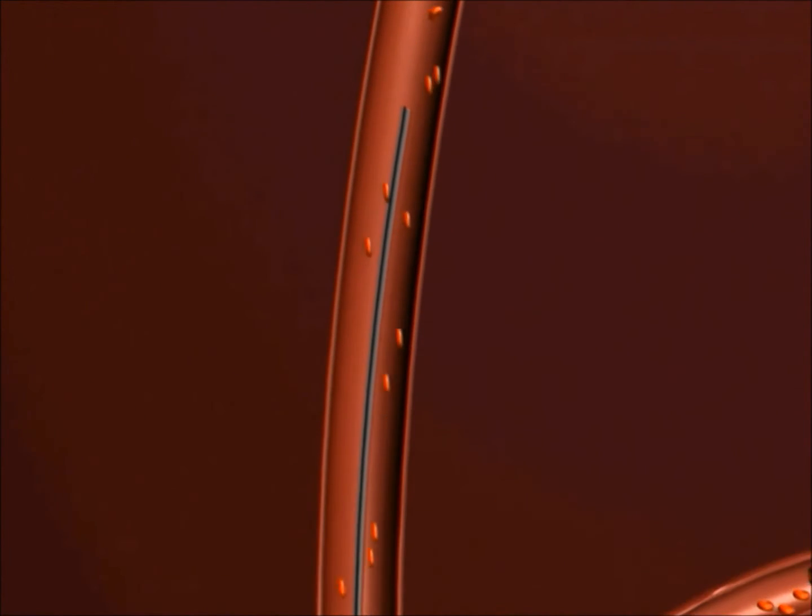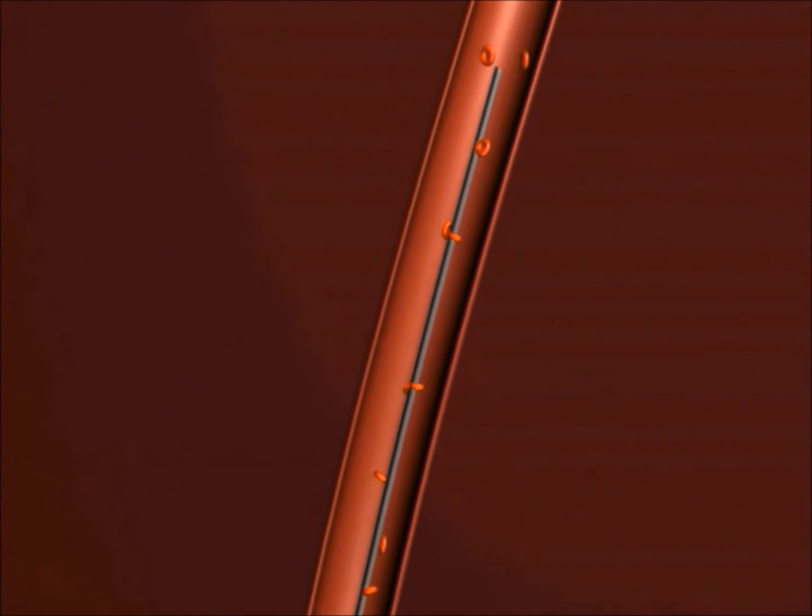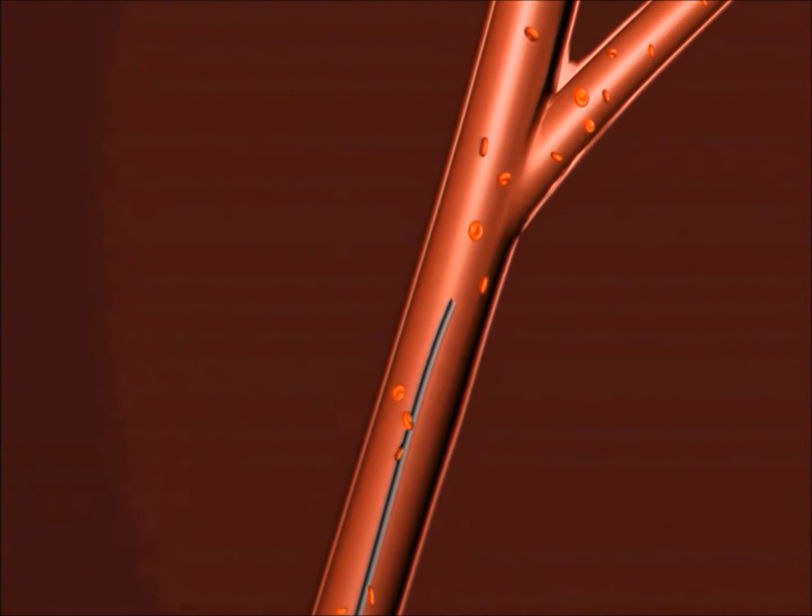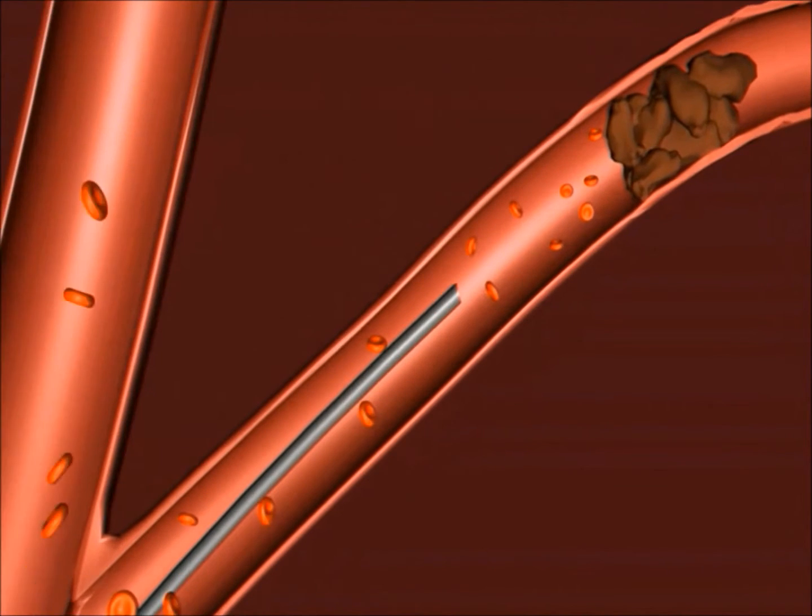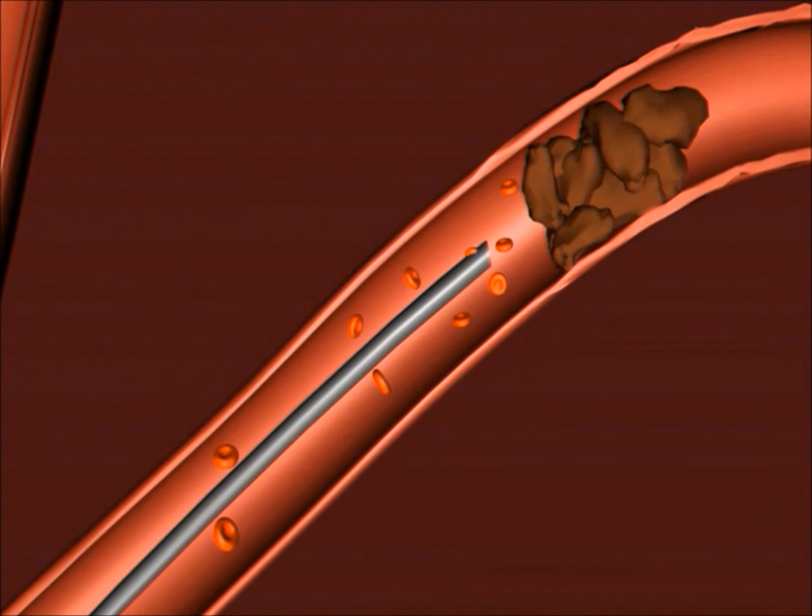The guide wire is guided to the ischemic site. This is followed by the catheter shaft, which is guided over the guide wire via the designated lumen.